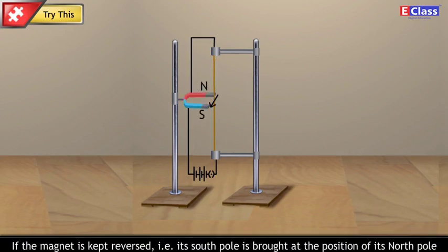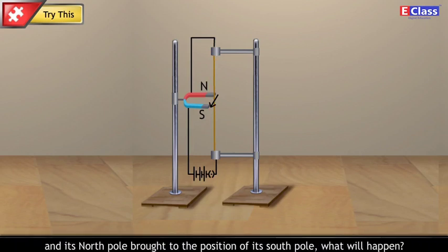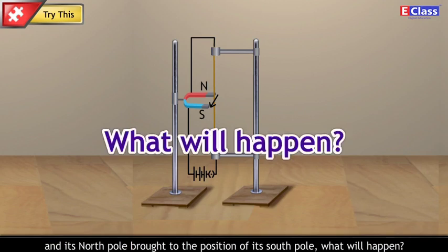If the magnet is kept reversed, that is, its south pole is brought at the position of its north pole and its north pole brought to the position of its south pole, what will happen?